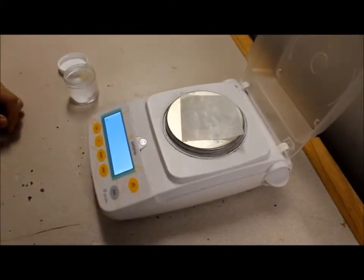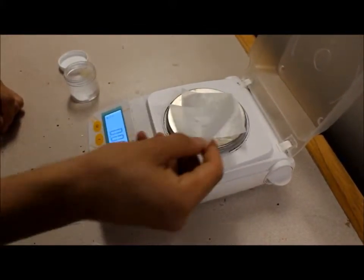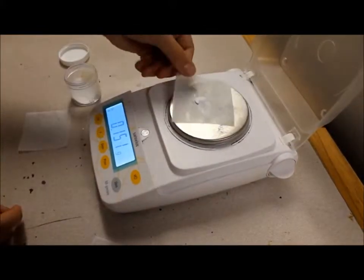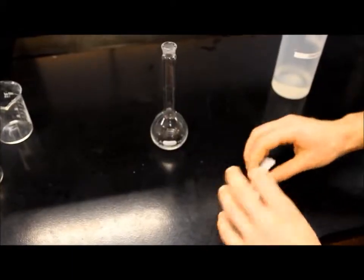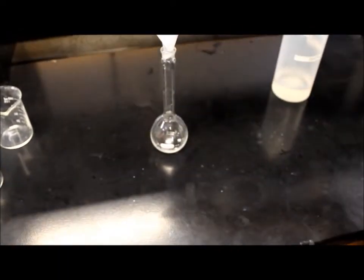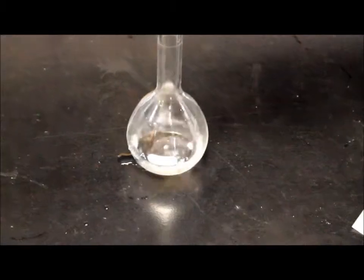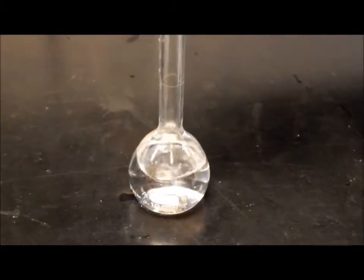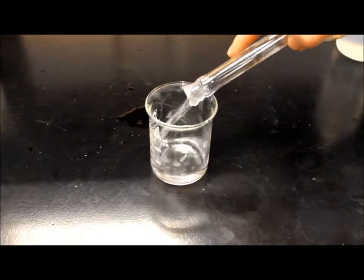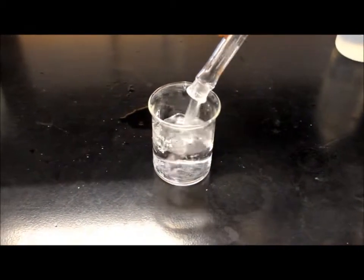Meanwhile, student B must prepare a 0.008 molar solution of sodium metabisulfate by weighing out roughly 0.15 grams, recording the exact mass, and mixing it with distilled water in the 100 milliliter flask filled to the line. Pour the solution into the 150 milliliter beaker.